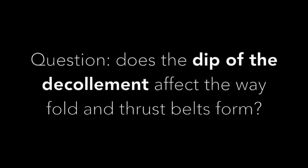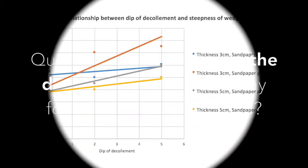But hold on. We're not quite done yet. Let's go a step further. Does the dip of the decollement affect the way fold and thrust belts form? Of course.